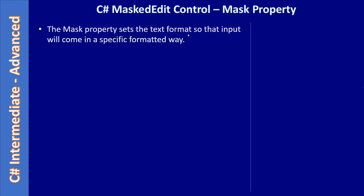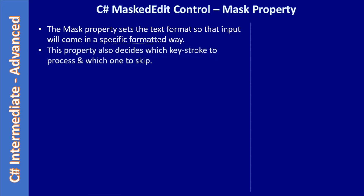In this video we will learn about the Mask property. The Mask property sets the text format so that input will come in a specific formatted way — that's the purpose of the masked text box. This property also decides which keystrokes to process and which ones to skip, so based on the Mask property we will allow some keystrokes and skip others.